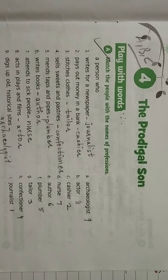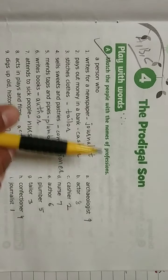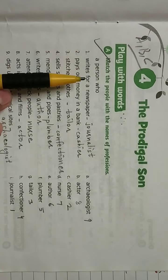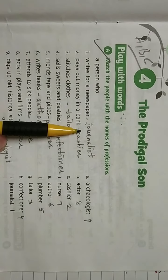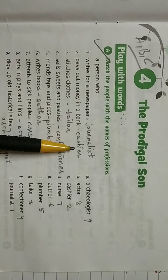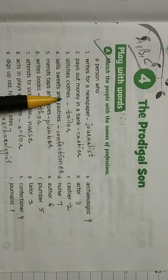Now turn to page number 19, lesson number 4, The Prodigal Son of your workbook. Question A: Match the people with the names of professions. A person who writes for a newspaper: journalist. Pays out money in a bank: cashier. Stitches clothes: tailor.